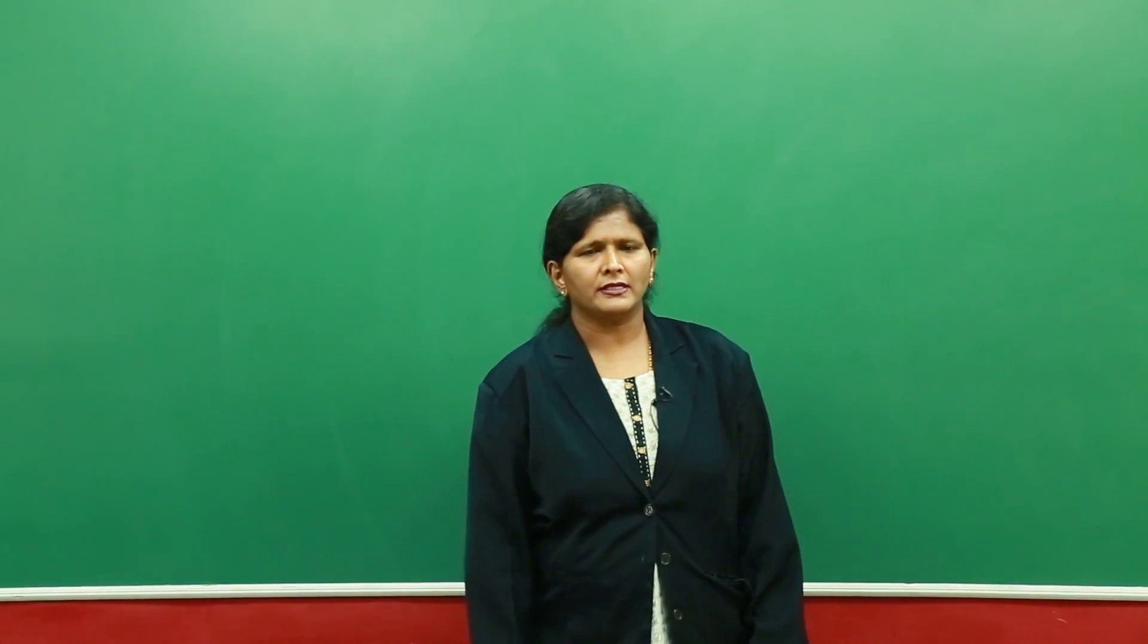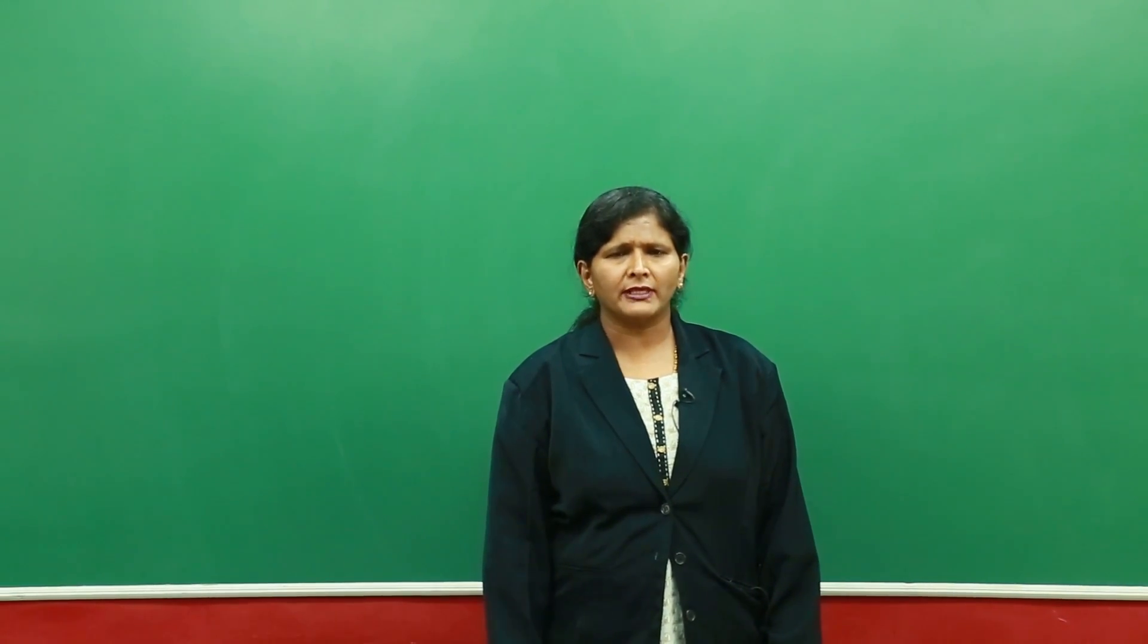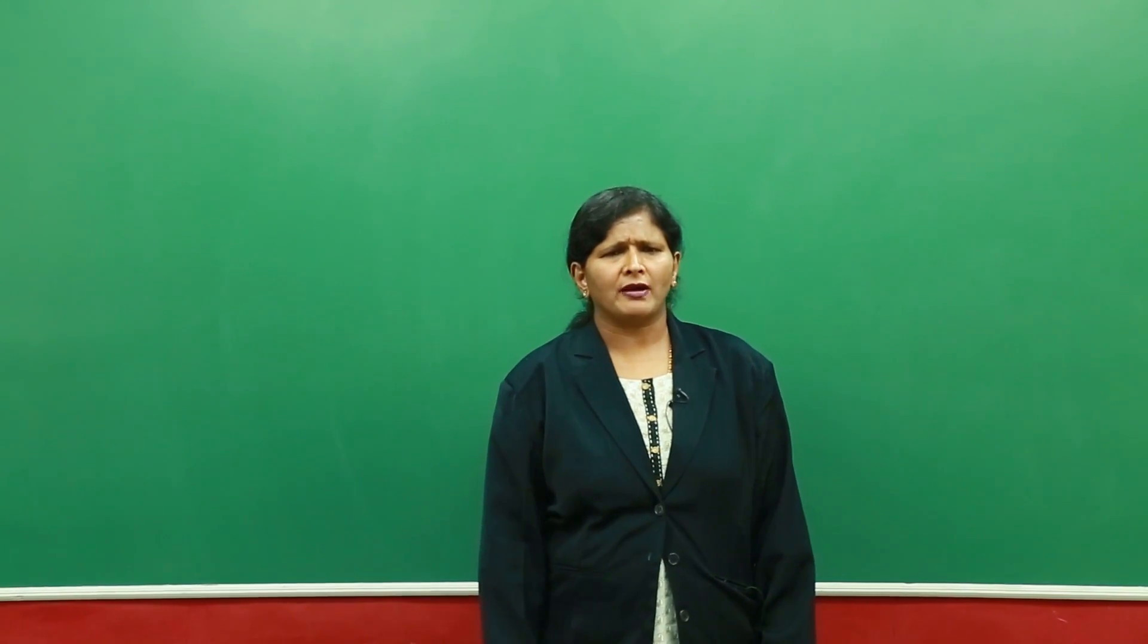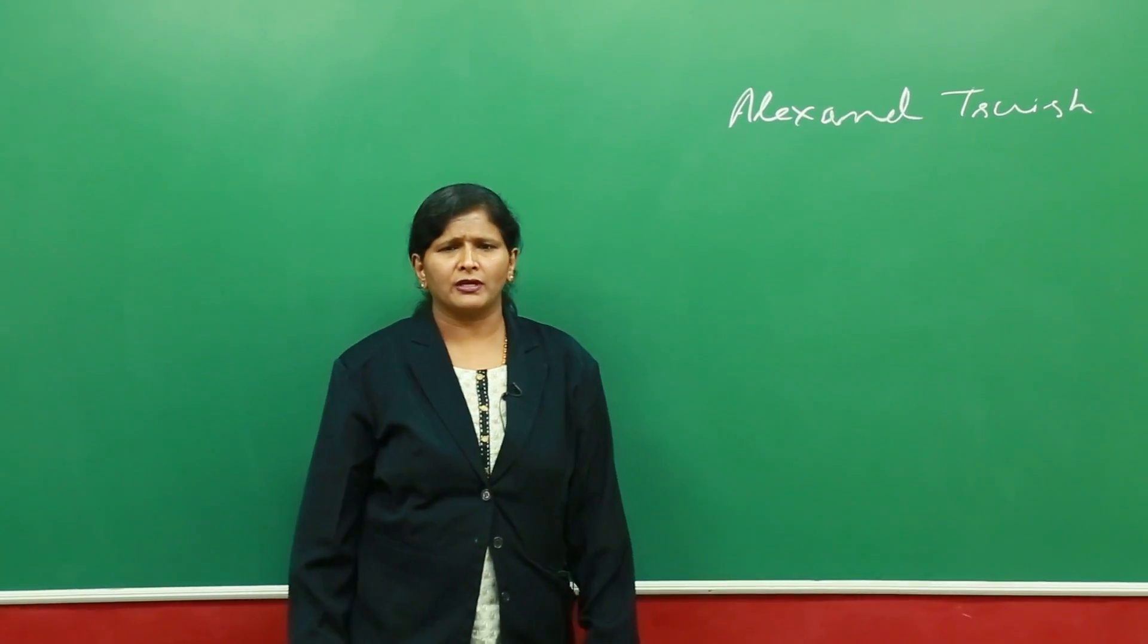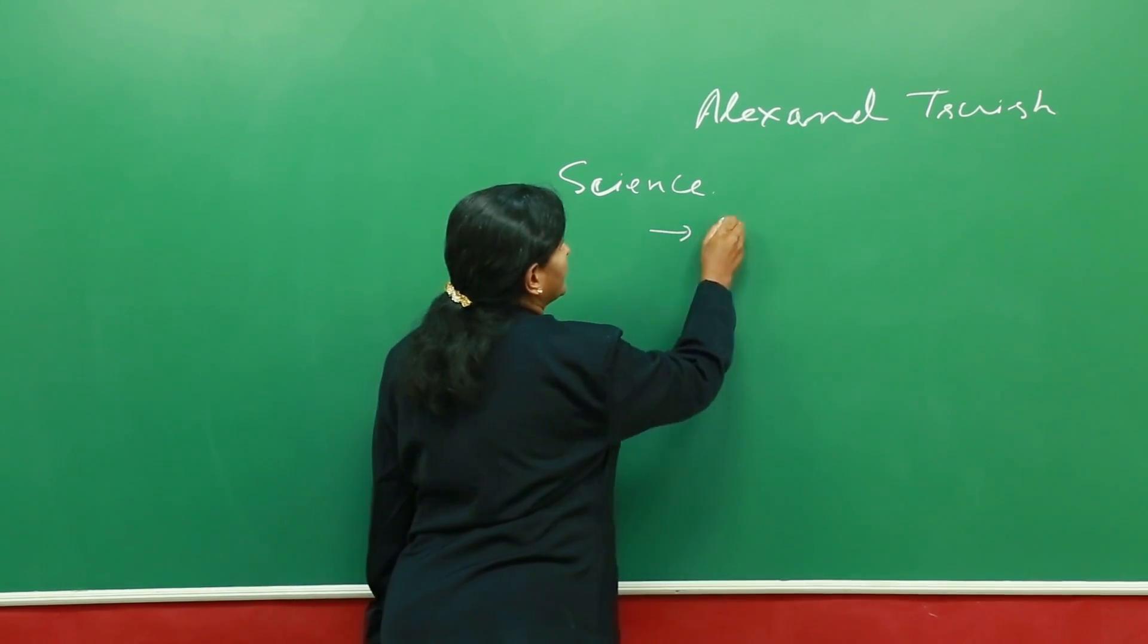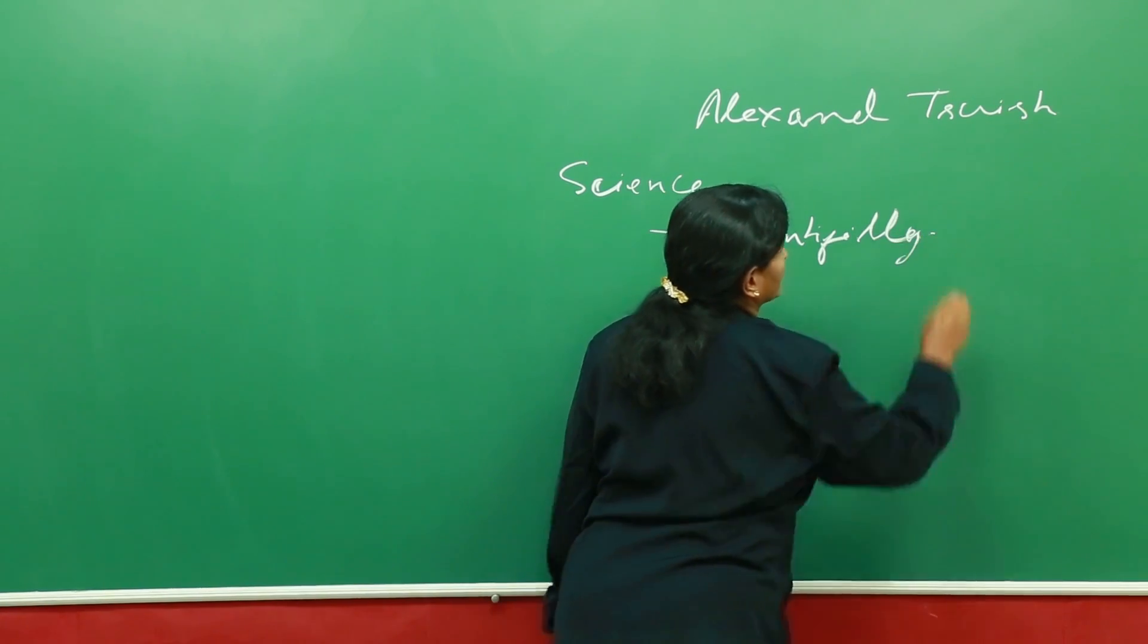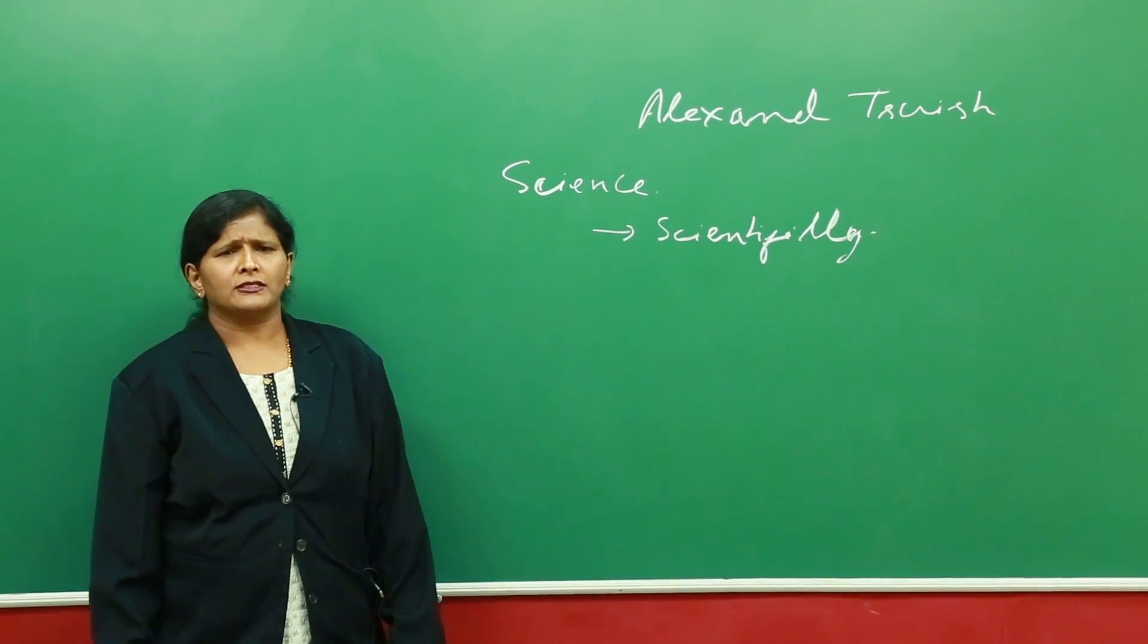The word pharmacognosy was coined by a scientist called Sidler, and another scientist called Smith had also written about this word. But the word modern pharmacognosy credit is given to a scientist called Alexander, and he defined this pharmacognosy as a science whose objective is to study scientifically all the aspects of the drugs which are obtained from plant, animal, and other sources.